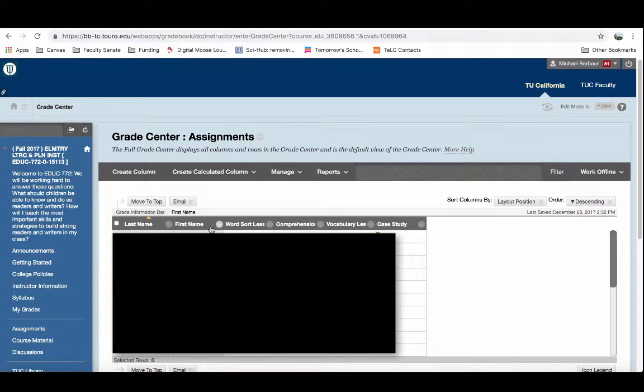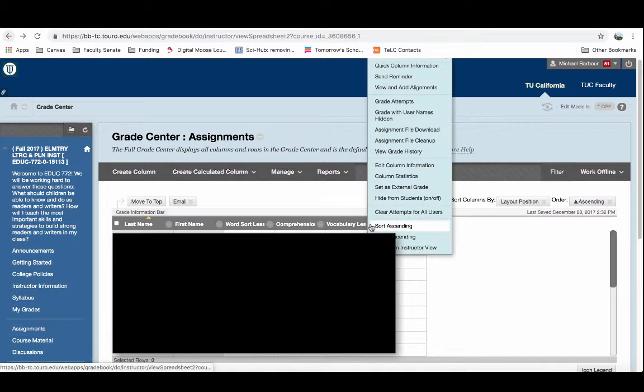This is essentially the gradebook portion. If I want to download the student submissions, I can click on this little down arrow next to the name for this particular assignment. One of my options will be Assignment File Download.